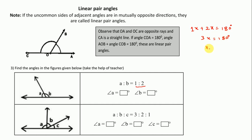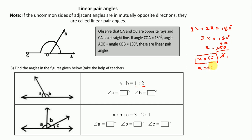1x plus 2x is 3x, equal to 180 degrees. So x = 180 ÷ 3 = 60. We take A as 1x, so A = 60 degrees. And B is 2x, that is 120 degrees — double of A. So the angles are 60 and 120.